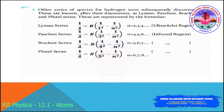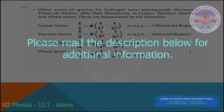Other series of the hydrogen spectrum were subsequently discovered. After the Balmer series, Lyman, Paschen, and Brackett all found series. The formula for the Lyman series is 1/λ = R(1/1² − 1/n²), which corresponds to wavelengths in the ultraviolet region.